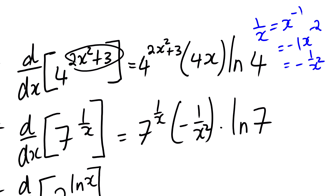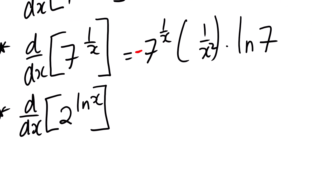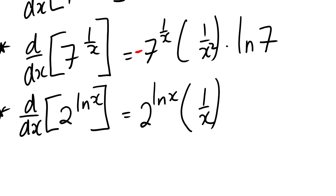We can simplify that by bringing the negative sign forward. For the last exercise, we have 2 to the power (ln x). The derivative of ln x is 1 over x, so the derivative is 2 to the power (ln x) multiplied by 1 over x multiplied by ln 2.